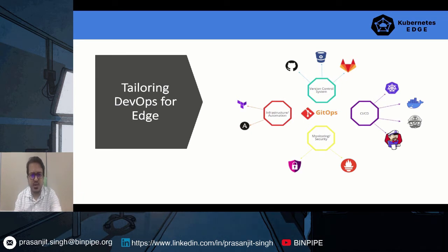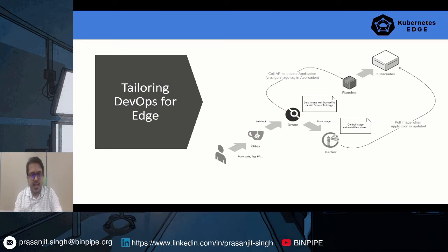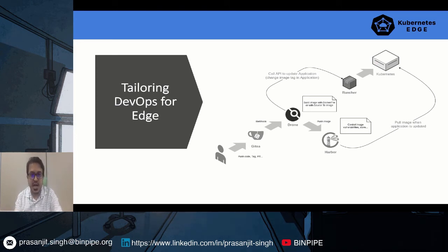For declarative pipelines and CI/CD on the edge, you can use Drone. Drone is a very lightweight CI/CD tool you can use to build images, launch tests, and deploy on different environments. It is lightweight and does the job. If you have a hybrid infrastructure where you can afford to run a Jenkins server on the cloud, you can use that too, but it is a bit heavyweight because it's Java-based. If you are operating just on the edge, prefer Drone.